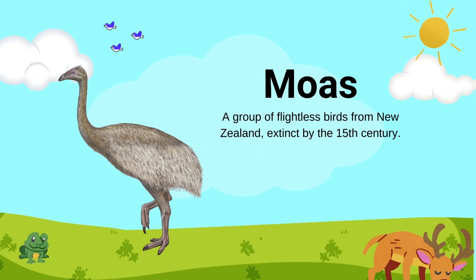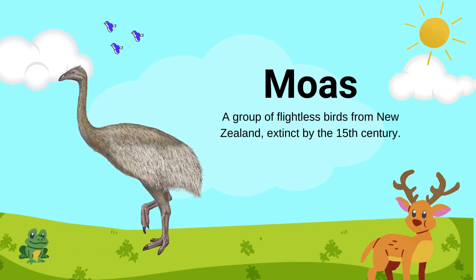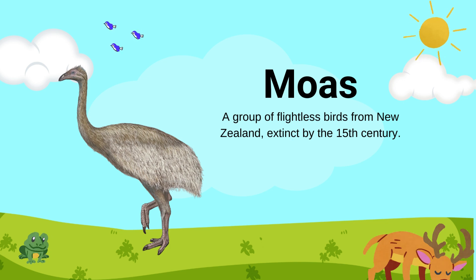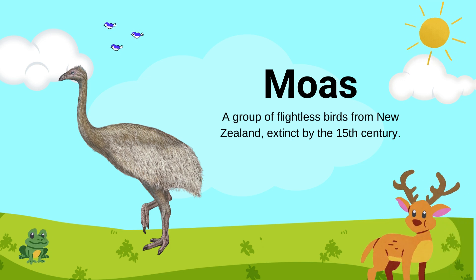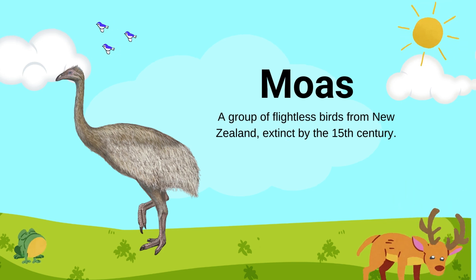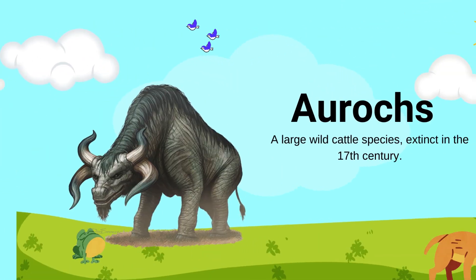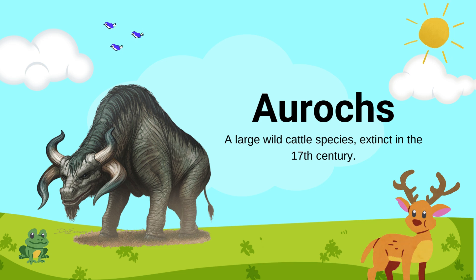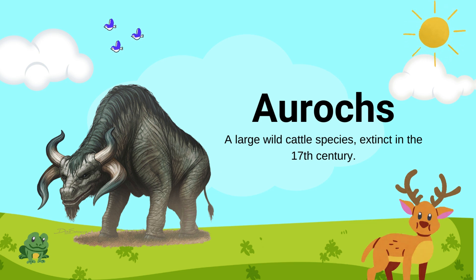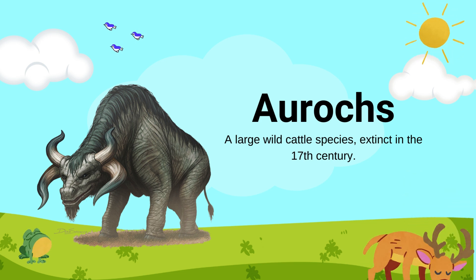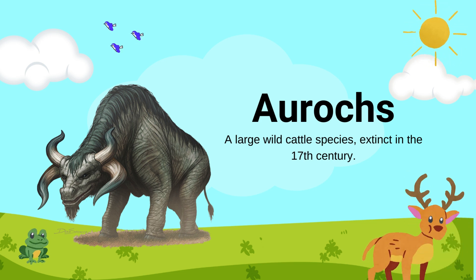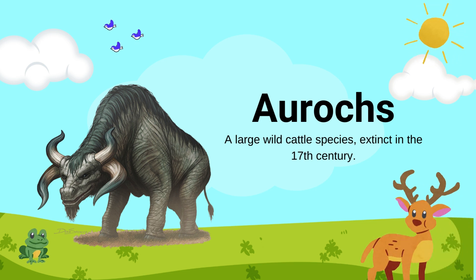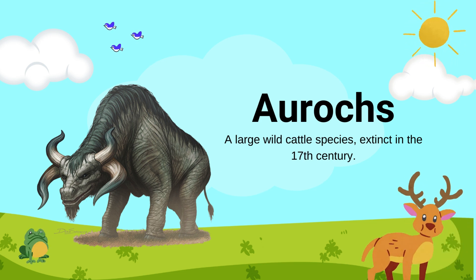Moa: a group of flightless birds from New Zealand, extinct by the 15th century. Aurochs: a large wild cattle species, extinct in the 17th century.